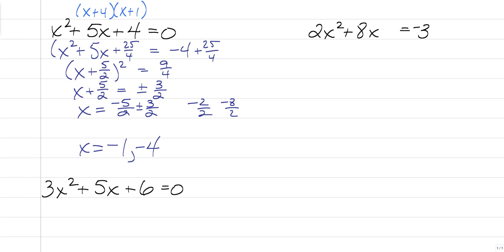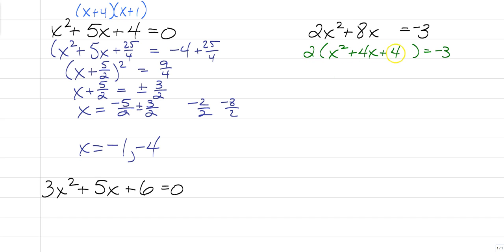For the next one, the first thing you have to do is factor out your 2, leaving you with x squared plus 4x, and that equals negative 3. Here's another tricky part — remember, we need to stay balanced on both sides. Half of 4 gives you 2, squared is 4. But look at the left side: we didn't add 4 to the left side — we actually added 2 times 4 if we were to distribute, which would technically be 2x squared plus 8x plus 8. So we need to add 8 to the other side. That's going to give us 2 times x plus 2 squared equals 5.